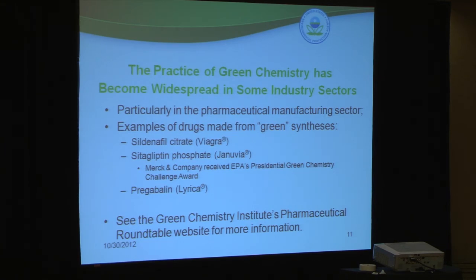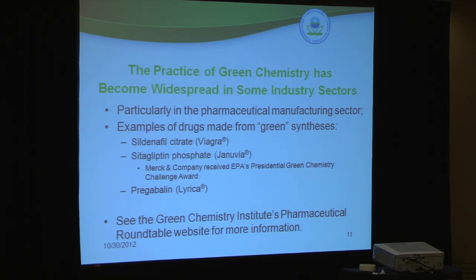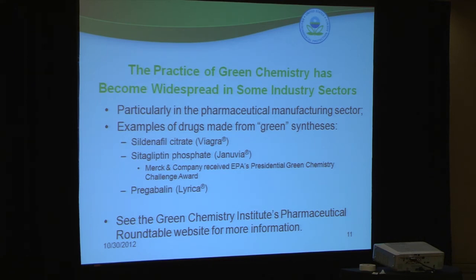A lot of industries have been implementing green chemistry practices over the past 10 to 15 years to varying degrees, but it's particularly common in the pharmaceutical manufacturing sector. Many drugs nowadays are made from green syntheses. Some widely used examples include Viagra, Januvia, and Viracept. Januvia, developed by Merck, earned EPA's Presidential Green Chemistry Challenge Award for their synthesis. More examples can be found at the Green Chemistry Institute's pharmaceutical roundtable website.